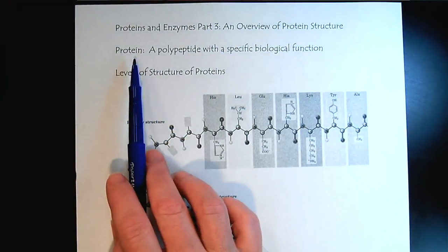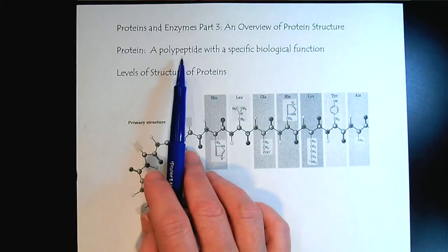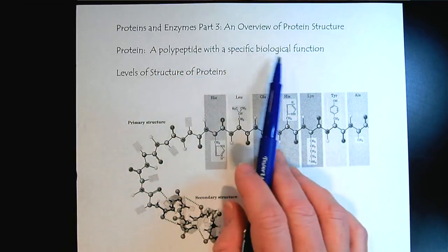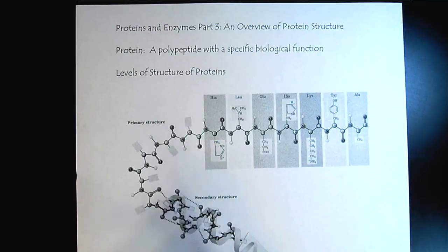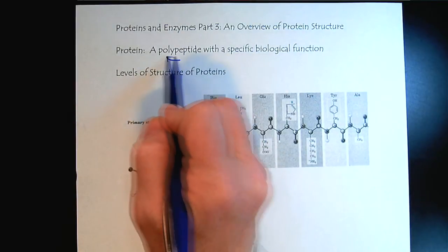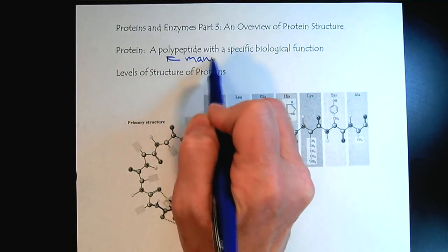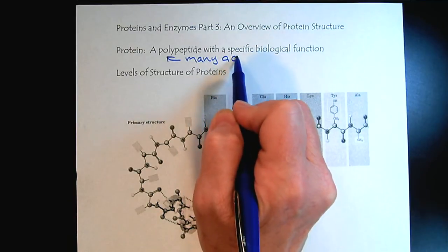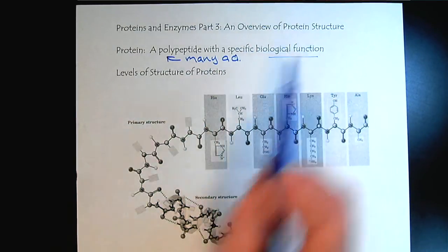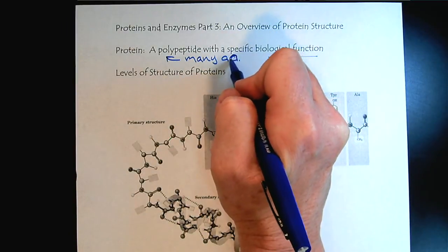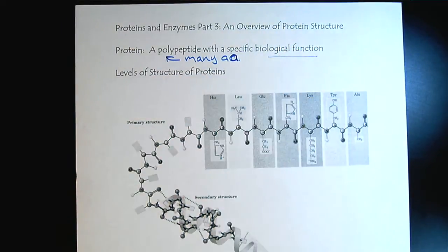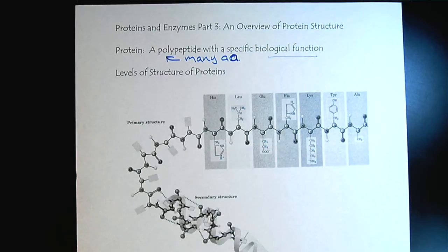It's important to know that a protein is a polypeptide with specific biological function. Poly means many, so we have many amino acids linked together. This is a key point because we can go into the lab and string together amino acids all day, but without a biological function, we have not made a protein.